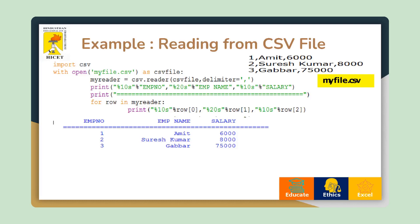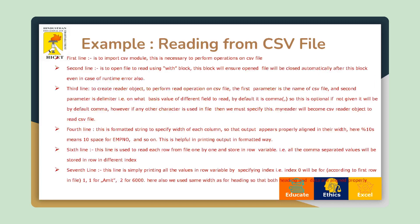In this example, I have a file called myfile.csv where values are separated by a comma — for example, one, Amit, 6000. This is a record with three columns and three rows. This will be displayed using csv.reader, which reads the CSV file and displays output in a formatted way. Since we want formatted output, I'm using format specifiers like %10s, %20s, and %10s to display it in a particular way.